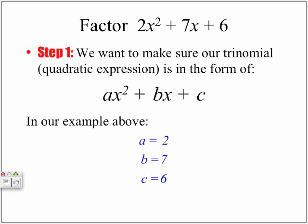Step 1: we want to make sure our trinomial, our quadratic expression, is in the form AX squared plus BX plus C. We want to rearrange our equation if needed — most likely it will already be in the proper order, but a teacher might give it to you in a different order. In the above example, our A value is equal to 2, our B value is positive 7, and our C value is positive 6. We need to know these numbers because they are going to come in handy when factoring.